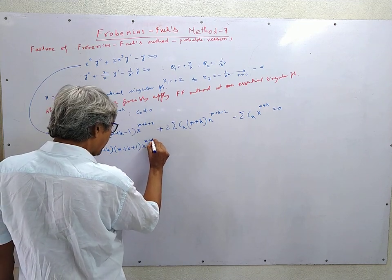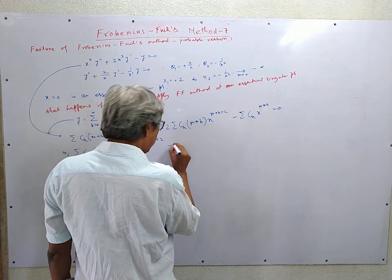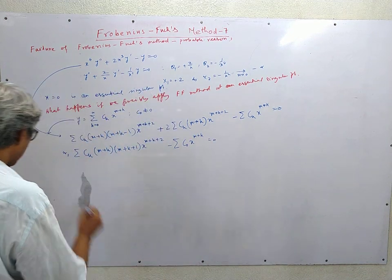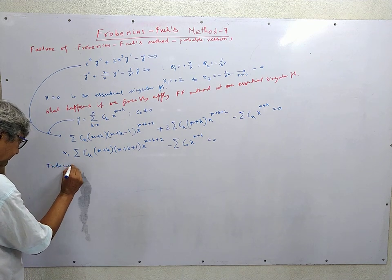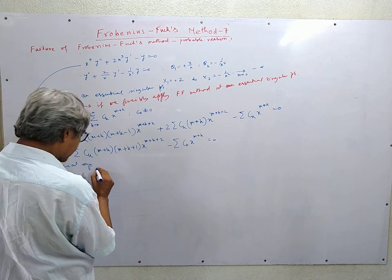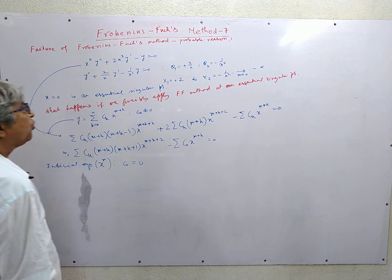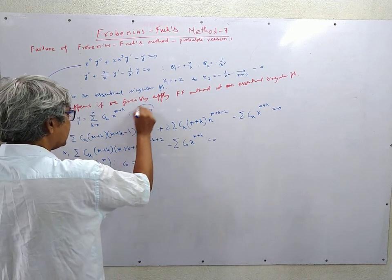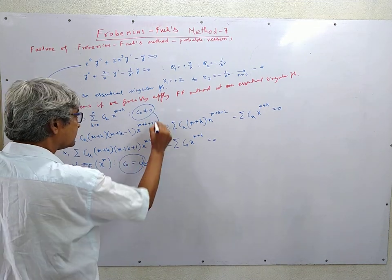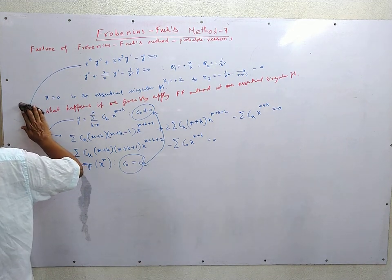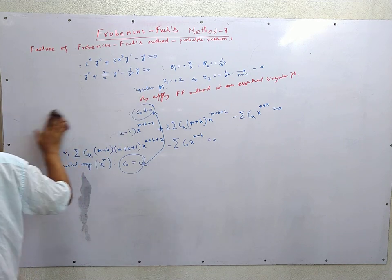After substitution and simplification, we obtain terms involving x^(m+k+2) minus c0·x^(m+k) equal to zero. The lowest power is x^m, which gives c0 = 0. This is in direct contradiction with our assumption that c0 ≠ 0. So if we forcibly apply the Frobenius method, the basic assumption is violated. It is well justified that the Frobenius method cannot be applied at an essential singular point.